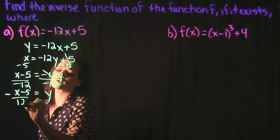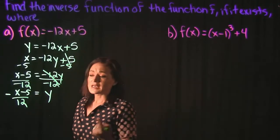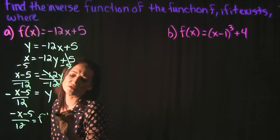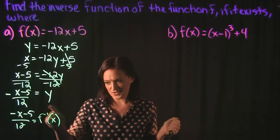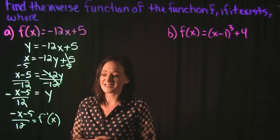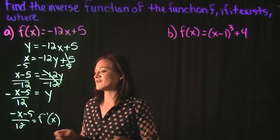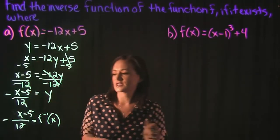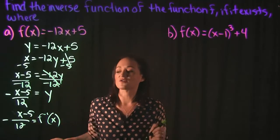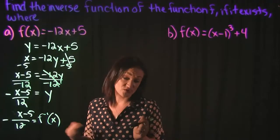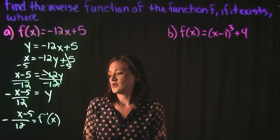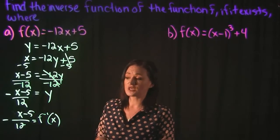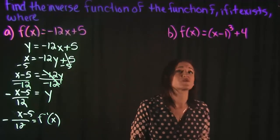On the left hand side we have negative x minus 5 over 12. The last step is to replace y with the inverse function notation: f inverse of x equals negative x minus 5 over 12. That negative needs to go out in front to show it applies to the entire fraction. You could also distribute it to the numerator — that is your inverse function for example A.